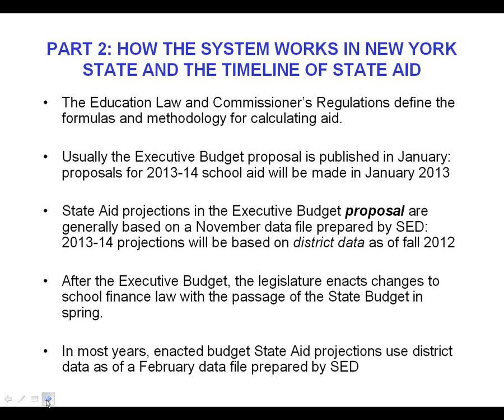We're going to move on to section 2, which is all about timelines and the state aid cycle. All of what we do in this office is based on law and regulation, mostly education law. Some of our formula stuff is in other sections of state law, but it's all based on black and white — or we try our best to interpret it as such in education law, state law, and commissioner's regulations. The legislature creates those laws and the Board of Regents sometimes enacts regulations to further clarify them. The process starts in normal years with an executive budget proposal — the governor's proposal — published usually in January.